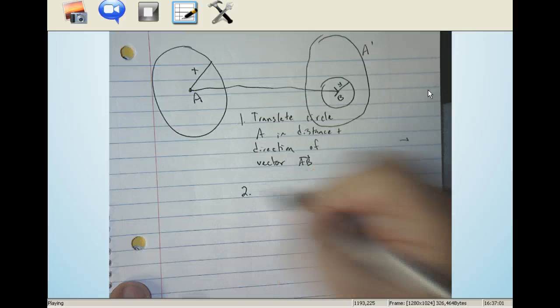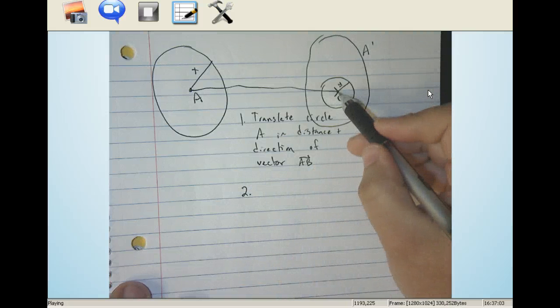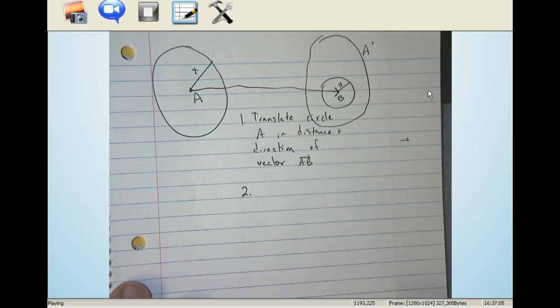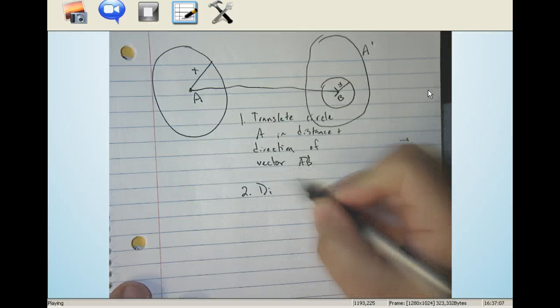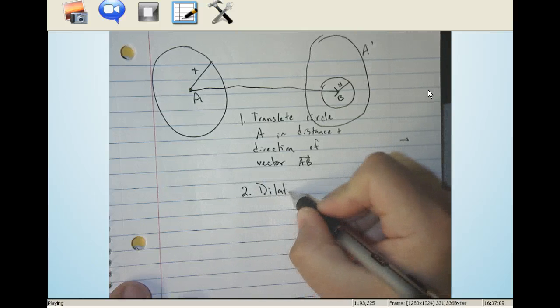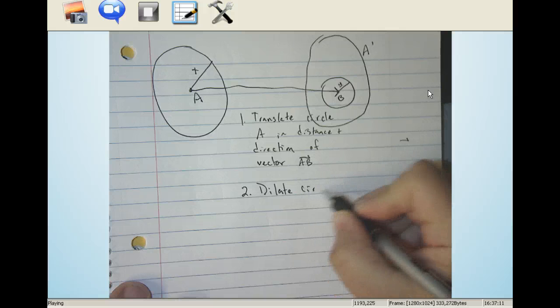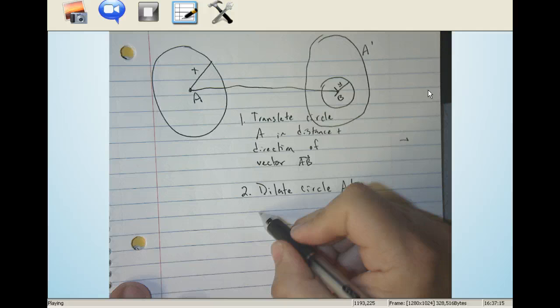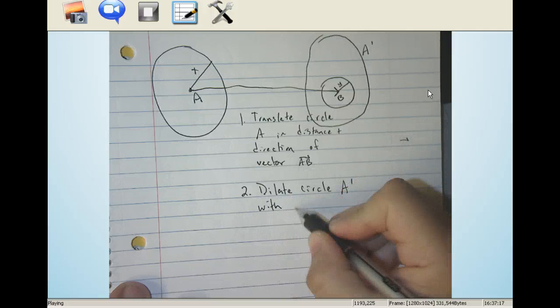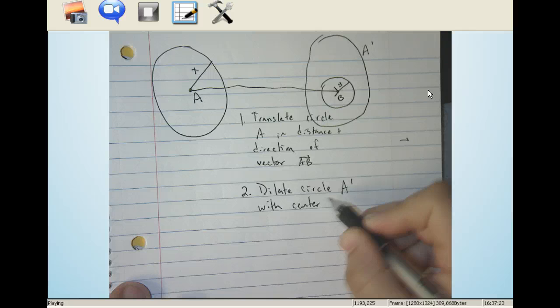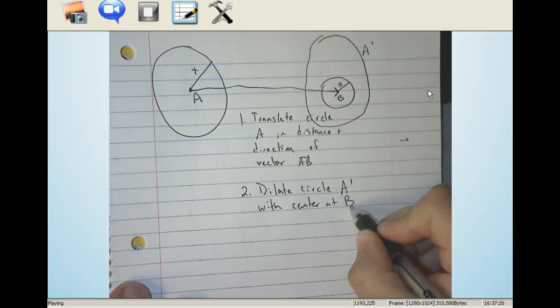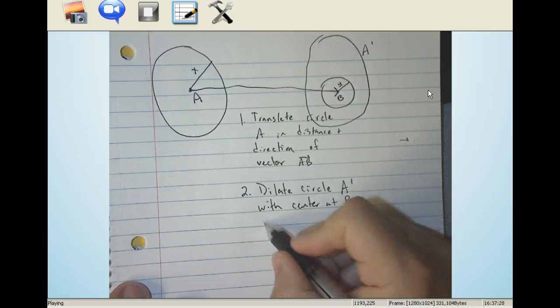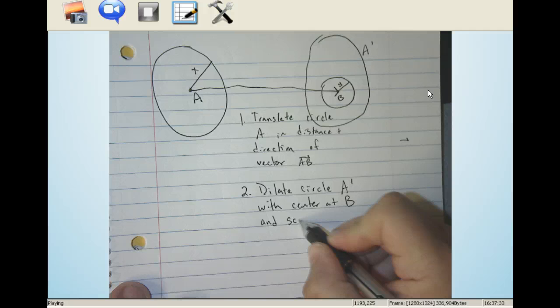So now we're going to, that's the new circle. The only thing we know about is it has a center at B. So the second step now is going to be to dilate circle A prime with a center or focus of the dilation. We call it a center of dilation at point B.